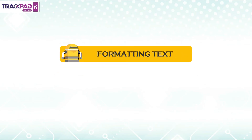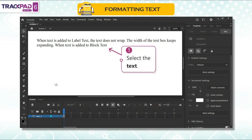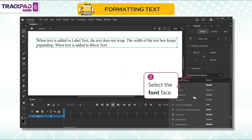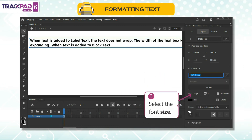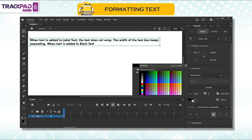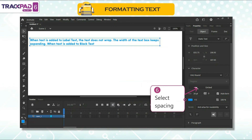Formatting text: Adobe Animate allows us to format the entered text by changing the font, color, size, etc., under the properties inspector. To format the text, follow these steps. First, select the text. Second, select the font face. Third, select the font size. Fourth, select the fill option. Fifth, select the color. Sixth, select spacing.